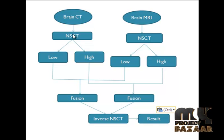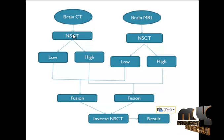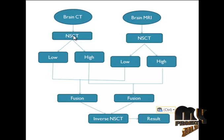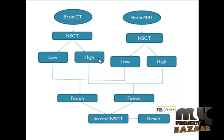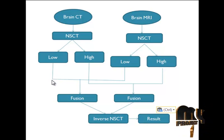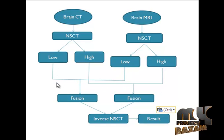The contourlet transform is a double filter bank structure implemented by the pyramidal directional filter bank, which decomposes images into directional subbands at multiple scales. After implementing the NSCT, we extract the low and high frequency coefficients for both the brain CT and MRI images. The extracted low and high frequency components are then fused — low with low and high with high — using absolute values.